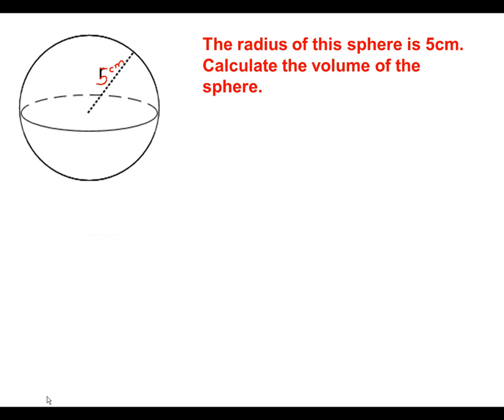Here's our first question. The radius of this sphere is 5 centimetres. Calculate the volume of the sphere. We have a sphere with radius of 5 centimetres, and it's asking us to calculate its volume. So all we need to do is look at the front of the exam paper and have a look at the formula for the volume of a sphere.